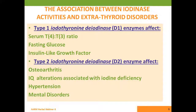Researchers are looking at the association between iodinase activities and extra-thyroid disorders. For one, the type 1 deiodinase enzyme — referred to as D1 iodothyronine deiodinase, or D1 enzyme — is involved with the T4 to T3 ratio and the balance a person keeps in their bloodstream and tissues. But this enzyme system is also known to play a role in glucose levels, maintaining fasting glucose, and insulin-like growth factors. This paints a picture of an enzyme system that could be involved in diabetes, insulin resistance, or general glucose regulation.